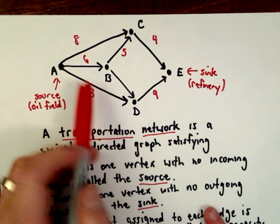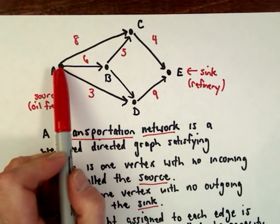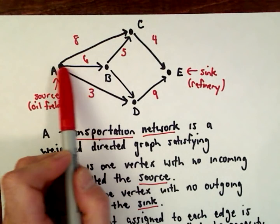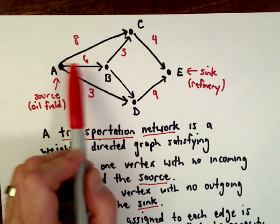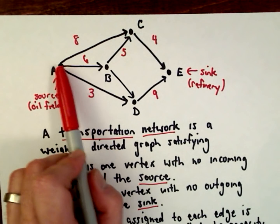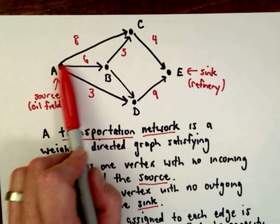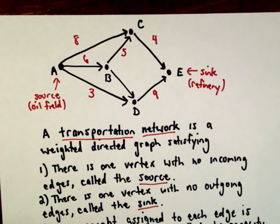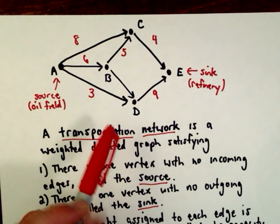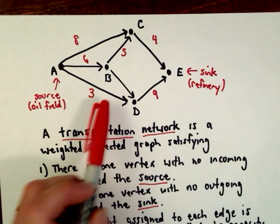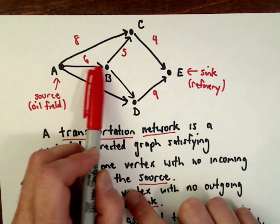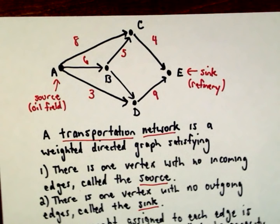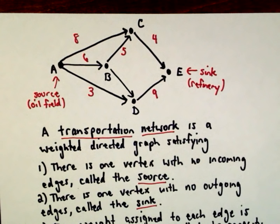You could think of the arcs as being pipelines — maybe measured in thousands of gallons. So there's a pipeline from the oil field a to city b that can carry 6,000 gallons maximum, and maybe a pipeline to city c that can carry at most 8,000 gallons. Vertices b, c, and d each have arcs both coming into them and going out of them. That's what's known as a transportation network: you've got a source and a sink.